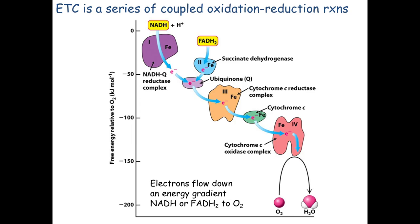Complexes I and II never interact with each other, but they both give their electrons to ubiquinone, also known as Q. Complex I gets electrons from NADH and gives them to Q. Complex II generates electrons from the succinate-to-fumarate reaction via FADH2, and gives those to Q as well. So whether you entered as NADH or FADH2, you both end up at Q, but you never go from complex I to II or II to I.